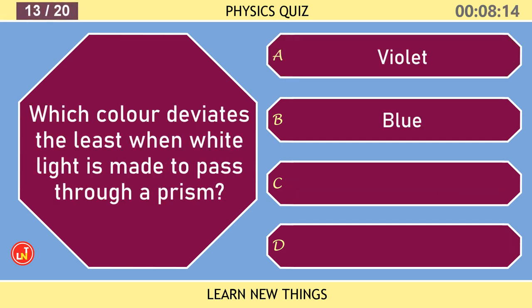Which color deviates the least when white light is made to pass through a prism? Red.